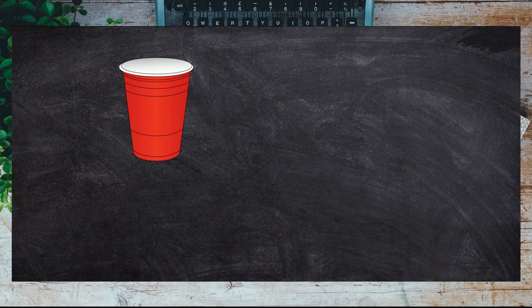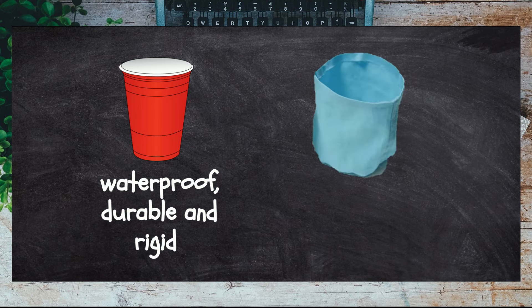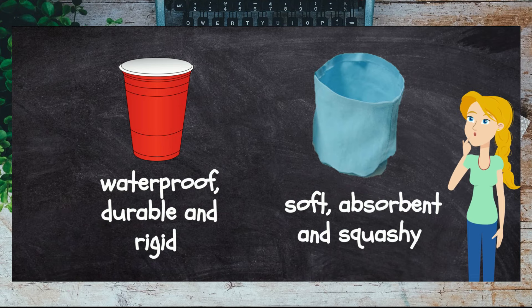What about this cup? It is made out of plastic because plastic is waterproof, durable, and rigid, so the water stays in the cup. If this cup was made out of fabric, it would be soft so it wouldn't keep its shape, and absorbent so all the water would go through it. You see, this is why we need to know about materials and their properties.